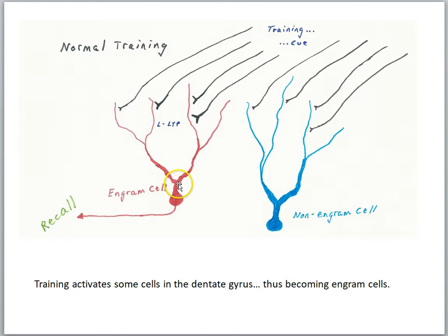That cell was actively processing the context. On the other hand, the blue cell over here was not turned on by that context. And so if the target cell is not active, we're not going to get any LTP at these synapses. And what this means is that the red cell is going to become part of the engram for the memory of that association, the context with the shock.